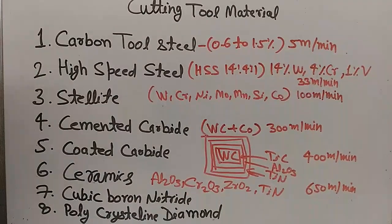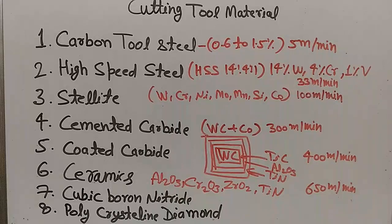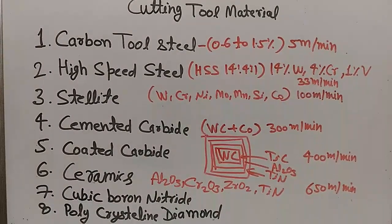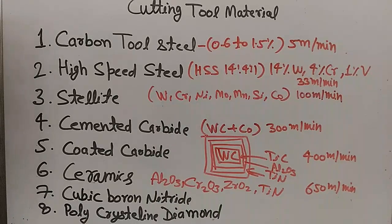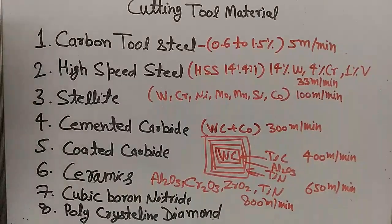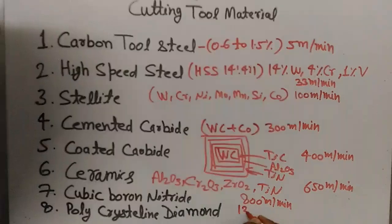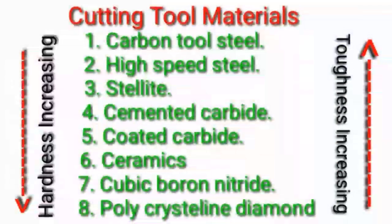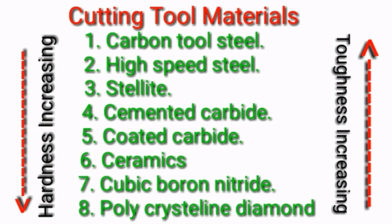Cubic boron nitride and polycrystalline diamond are produced in a laboratory by high temperature and high pressure methods. The maximum cutting speed for cubic boron nitride is 800 meters per minute. These are the materials used as cutting tool materials. The figure shows that as hardness increases, the corresponding toughness decreases.